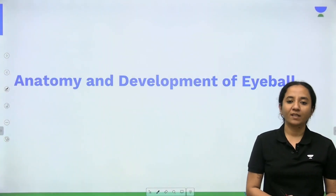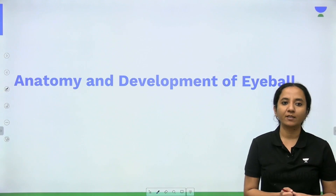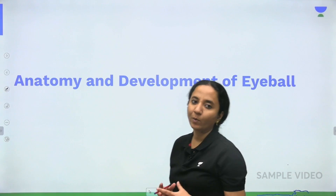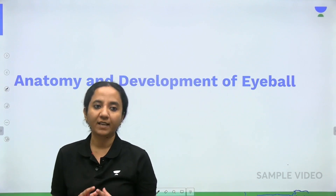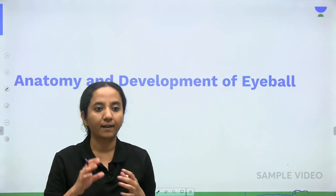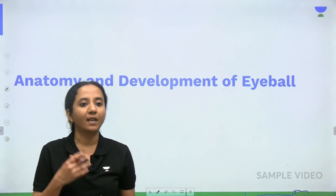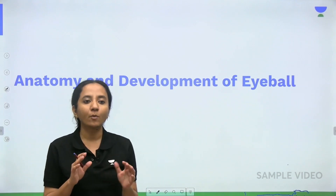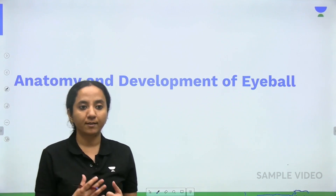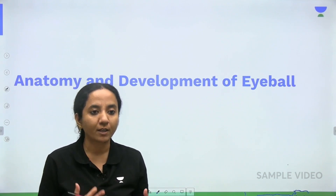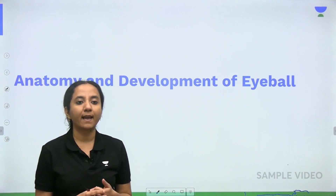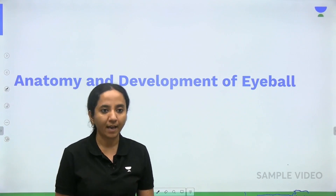Hello students, this is our first session on anatomy and development of the eyeball. In this session we will get an overview of the anatomy of the eyeball. We will not discuss each structure in detail — that will be done in individual chapters. Here we will analyze the anatomy of the globe as a whole, look at how it develops embryologically, and also cover the anomalies of development that can happen in the eyeball.